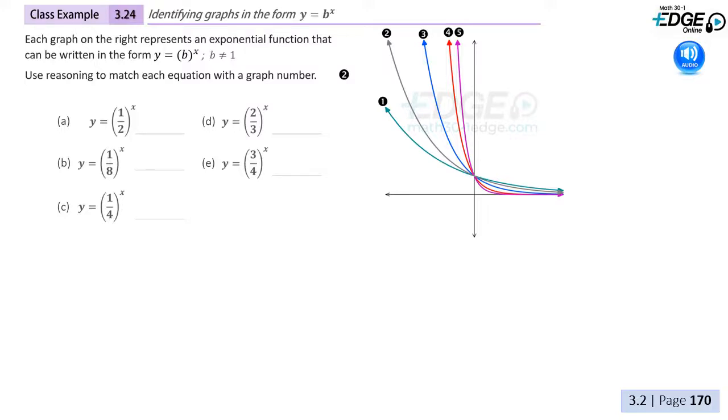Class example 3.24 gives us five exponential curves, here all demonstrating decay, meaning they are falling to the right, and asks us to associate each graph number to the corresponding exponential function a, b, c, d, or e.